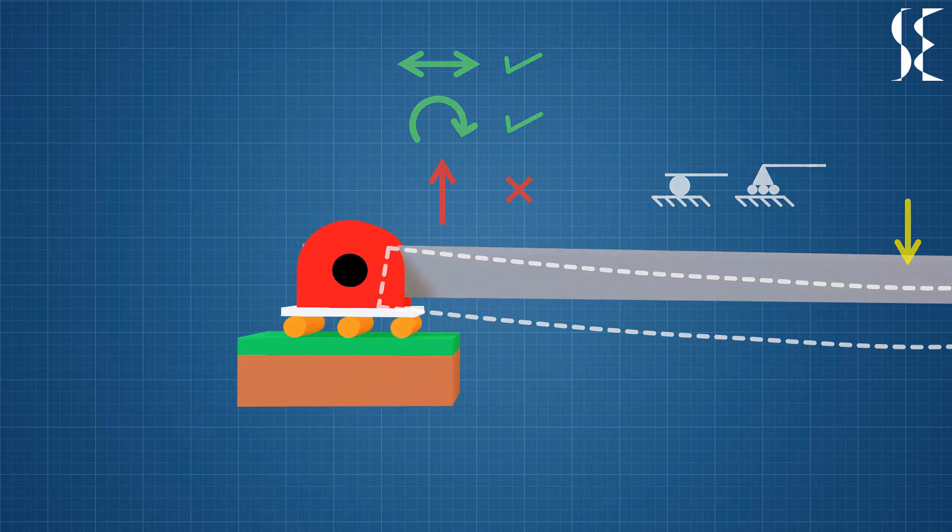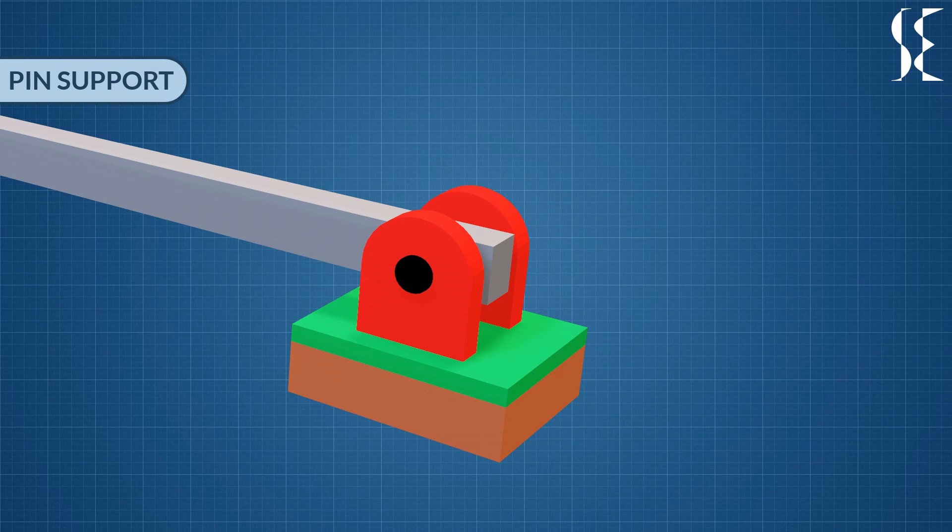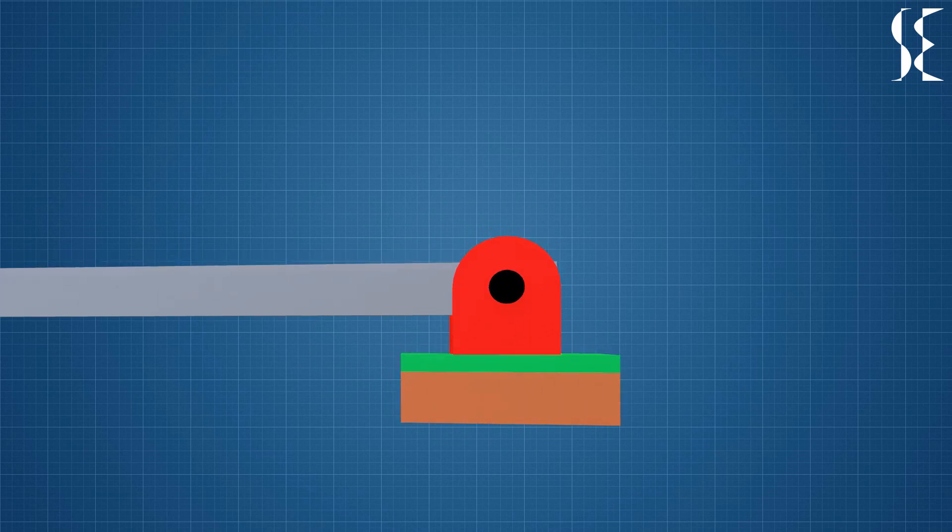Next comes pinch support. This support is fixed at bottom and has a hinge to attach members in it. The surface to which support is attached can be horizontal, vertical or sloped at any angle. This kind of support allows only rotation and restricts horizontal and vertical moments.